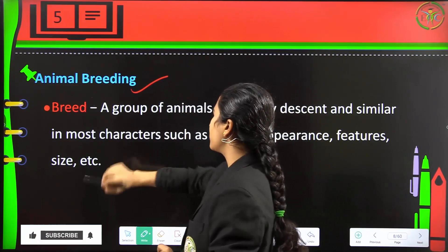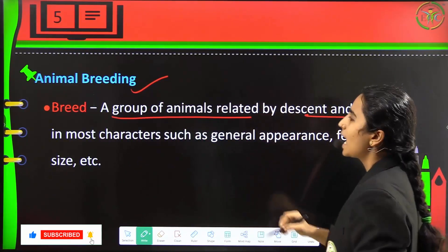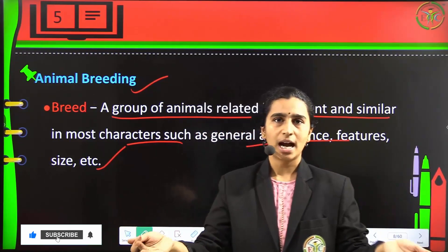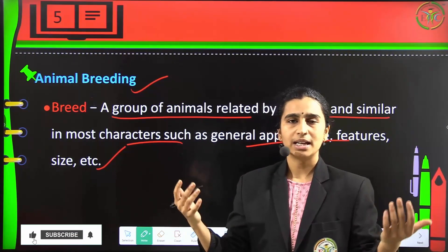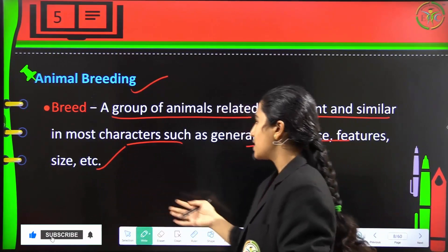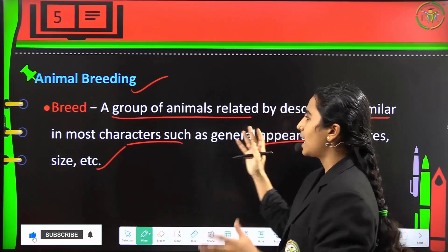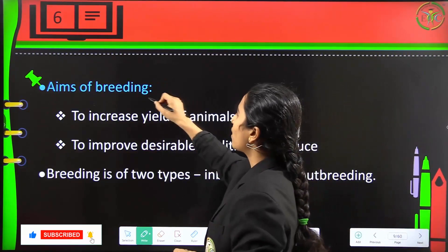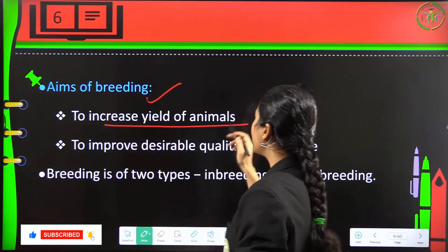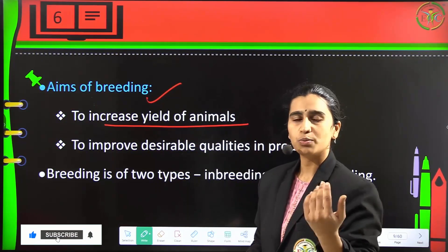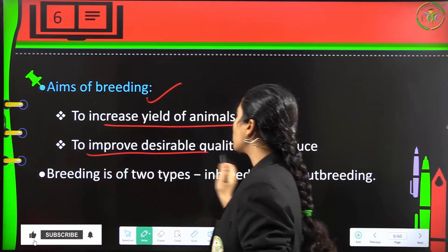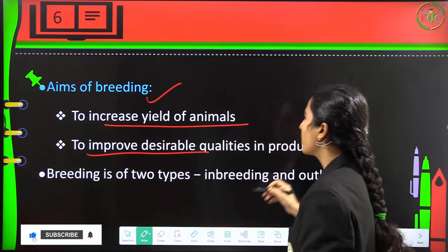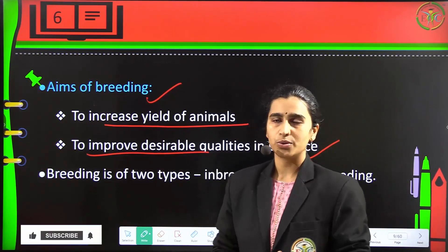A breed is a group of animals related by descent and similar in characteristics such as general appearance, features, and size. The aims of animal breeding are to increase the yield of the animal and to improve desirable qualities in production. For example, if you want more milk production, you breed animals to get higher milk yield.